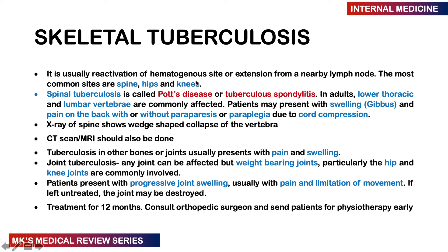Skeletal TB usually results from reactivation of a hematogenous site or extension from a nearby lymph node. It most commonly affects the spine, hips, and knees. Spinal TB — known as Pott's disease or tuberculous spondylitis — commonly affects the lower thoracic and lumbar vertebrae in adults, and may present with a gibbus deformity, back pain, paraparesis, or paraplegia from spinal cord compression. X-ray may show wedge-shaped vertebral collapse. CT and MRI should also be performed. This is a severe form of TB treated for 12 months.